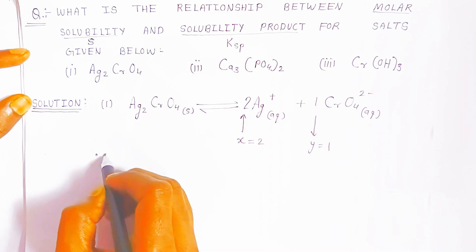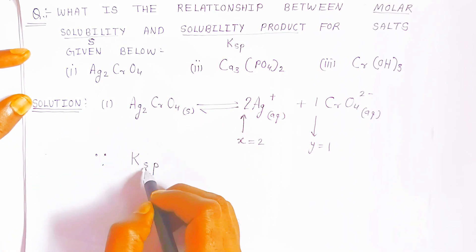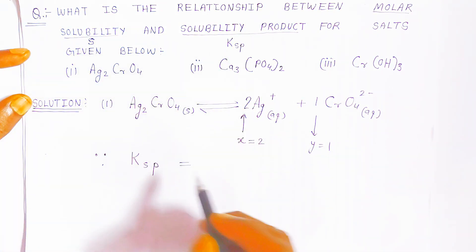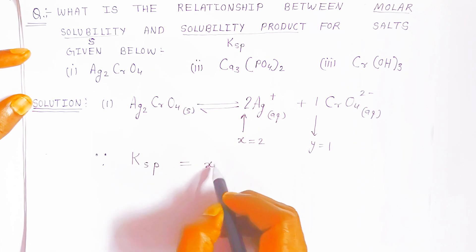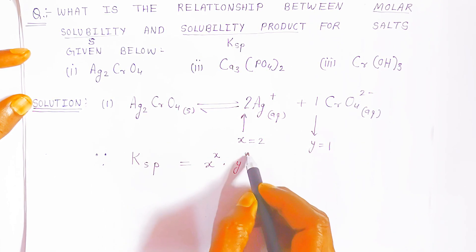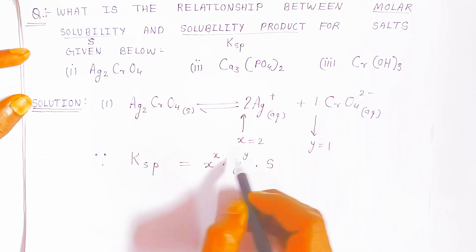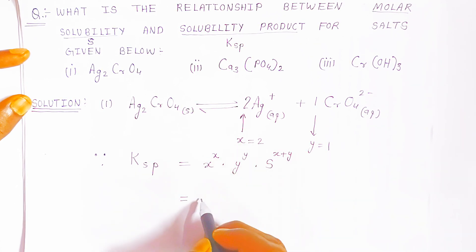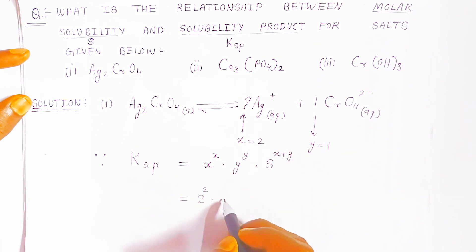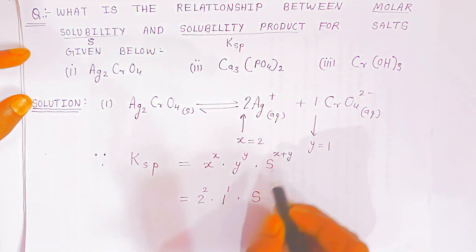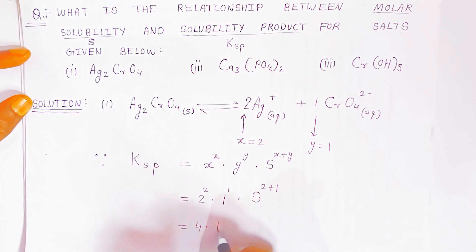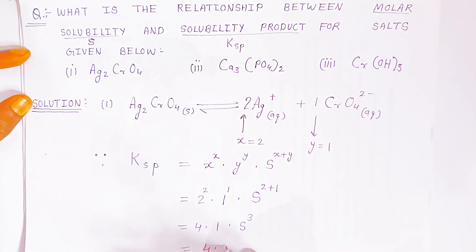You must know the formula for the solubility product: Ksp = x^x · y^y · S^(x+y). Without this formula you cannot find the relation between S and Ksp. Now put in the values: x = 2, so 2 raised to 2; y = 1, so 1 raised to 1; and S raised to (2+1), which is S³.